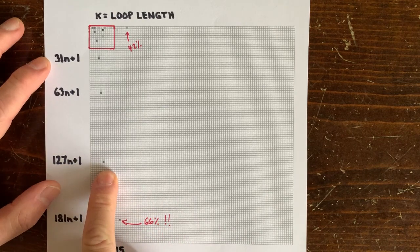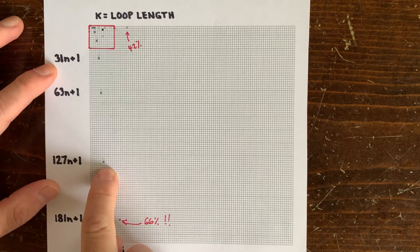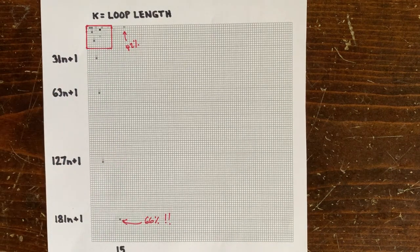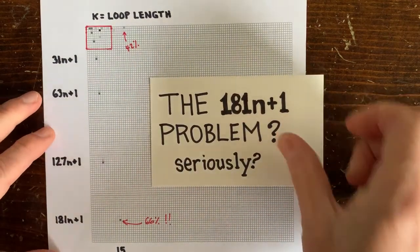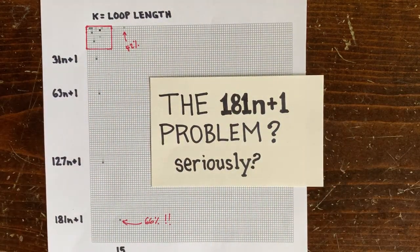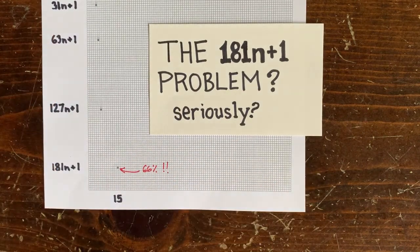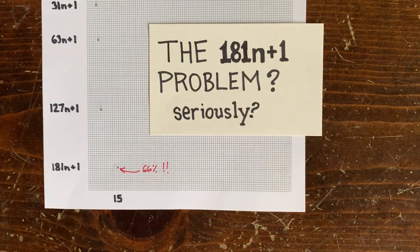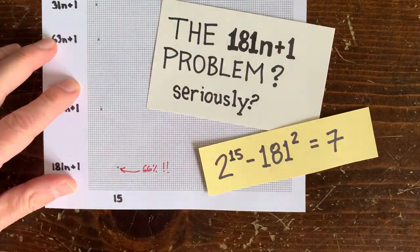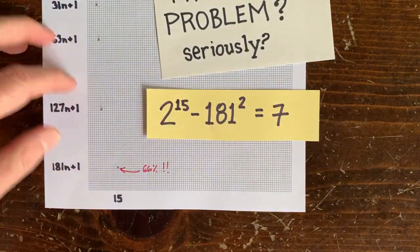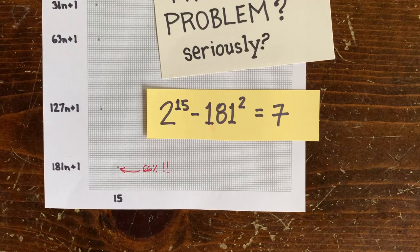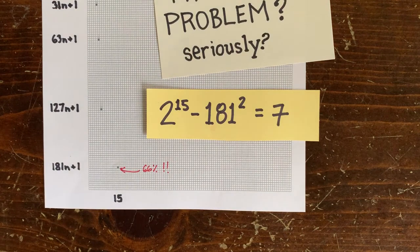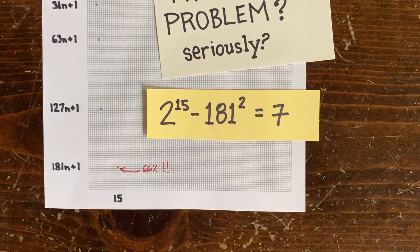So it looks like no more chances for finding loops, unless we just keep going a little further, where we find this weird outlier. For the 181n plus 1 problem, there's a 66% chance of a loop of length 15. That's because 2 to the 15th minus 181 squared is 7, which is a ridiculously small denominator. Is it just a crazy coincidence that this power of 2 is so close to this power of 181? Almost never happens anywhere in this chart.